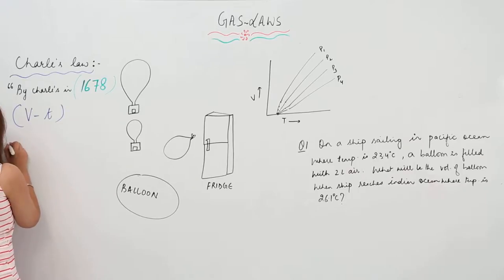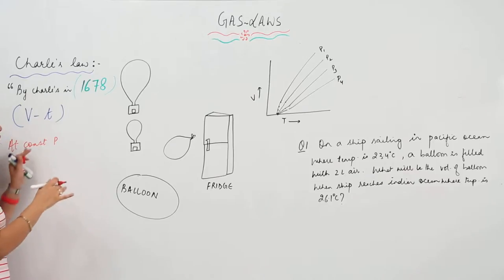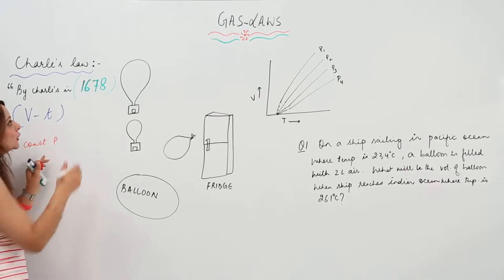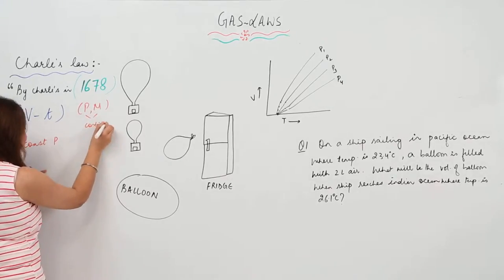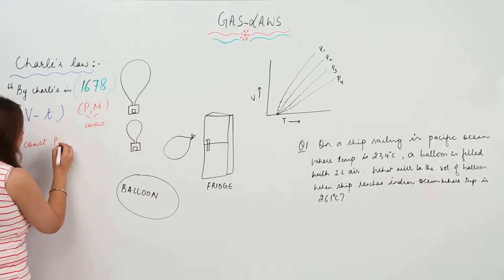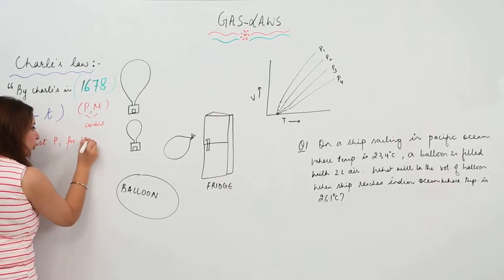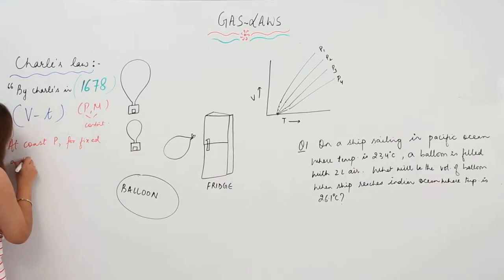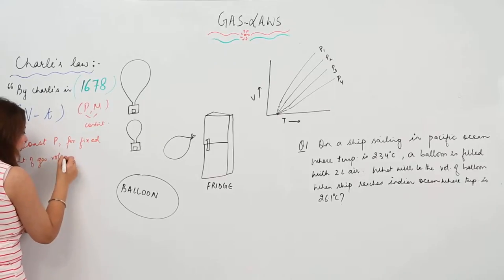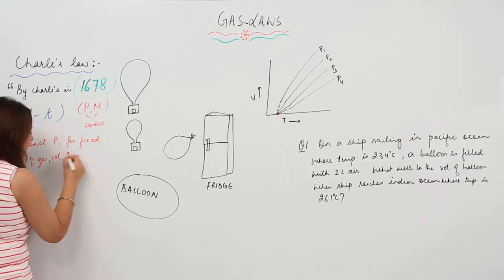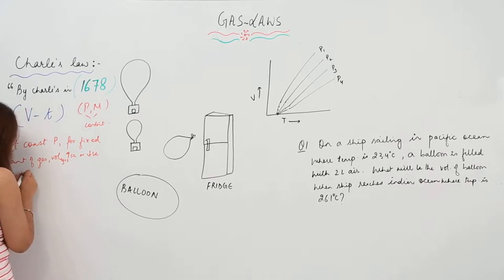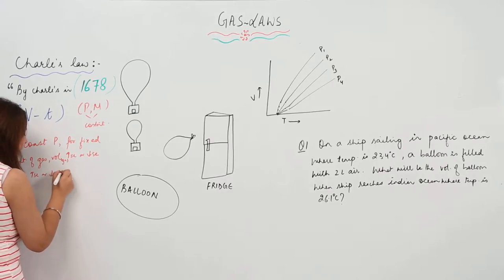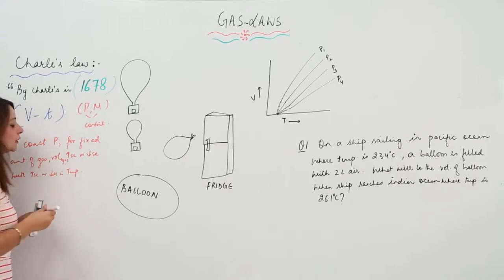The statement of this law is: at constant pressure, with the pressure and the mass of the gas being constant, for a fixed amount of gas, the volume increases or decreases with increase or decrease in temperature.